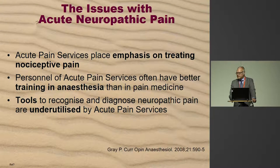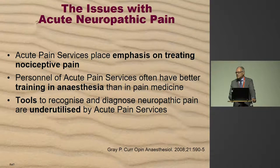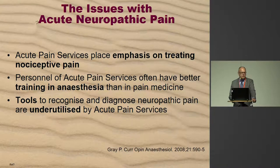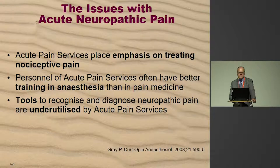The big problem is that anesthetists are very good running acute pain services and looking after nociceptive pain, but they often have much more training in anesthesia than in pain medicine. Therefore, they often don't make the diagnosis of neuropathic pain. The tools which we have in chronic pain to identify neuropathic pain — screening questionnaires and systems like that — are underutilized by acute pain services.